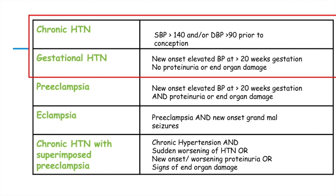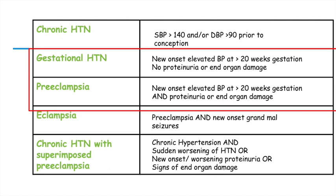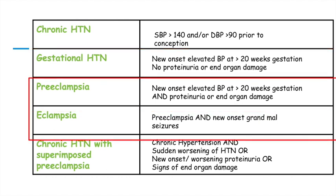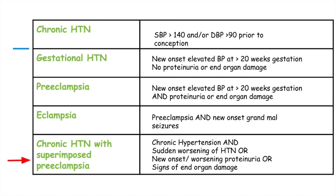Preeclampsia is like a step up from gestational hypertension in that there is also elevated blood pressure, but patients can also experience proteinuria or end organ damage. Eclampsia is basically preeclampsia with seizures. Chronic hypertension with superimposed preeclampsia means patients have chronic hypertension and sudden worsening elevated blood pressures, or new onset or worsening proteinuria, or signs of end organ damage.